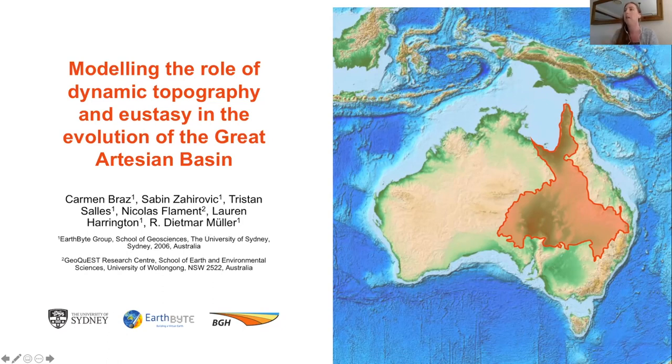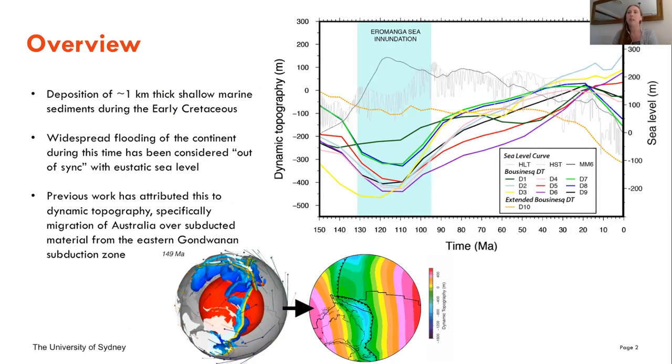In the Great Artesian Basin we've got about a kilometer of shallow marine sediments deposited during the Early Cretaceous, part of the Rolling Downs group in particular. These are deposited during the widespread flooding of the continent during the Early Cretaceous that has generally been considered out of sync with the eustatic sea level. This is usually in relation to Hark sea level curves.